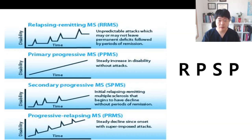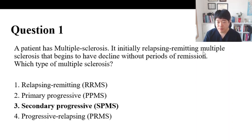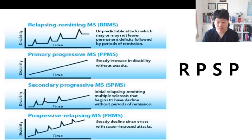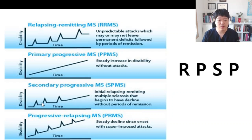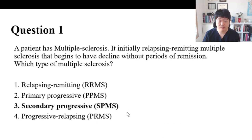Now return to the question. It initially presents as relapsing and remitting, then declining without a period of remission. I told you before — it initially relapsing and remitting, then declining without period of remission. So the answer is number three.